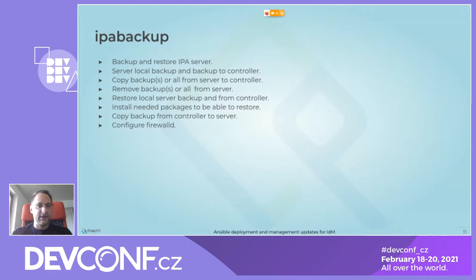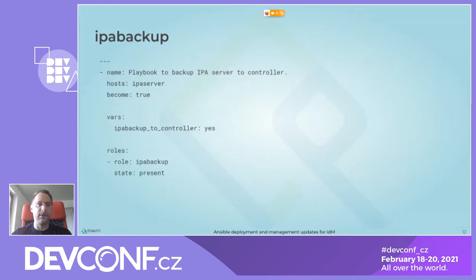The role works with yum, dnf, or whatever package manager you use. It can copy backups from the controller to the server and will configure firewalld accordingly. There is also a setting to turn firewalld configuration off, same as in the ipaserver and ipareplica roles. In the example, ipabackup_to_controller is set to yes — this defaults to no, which means there will be a local backup on the server itself.